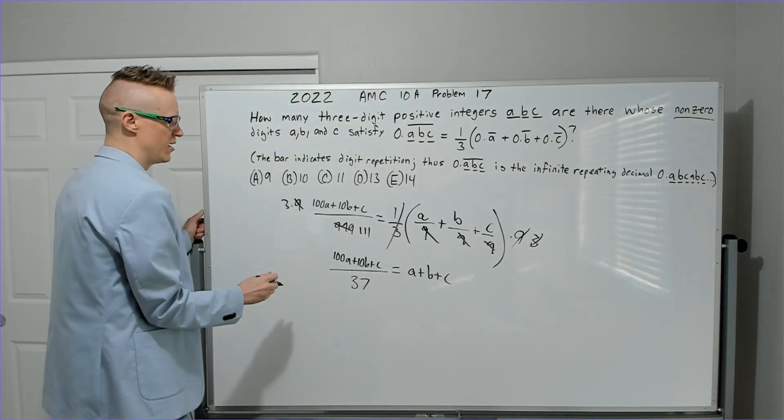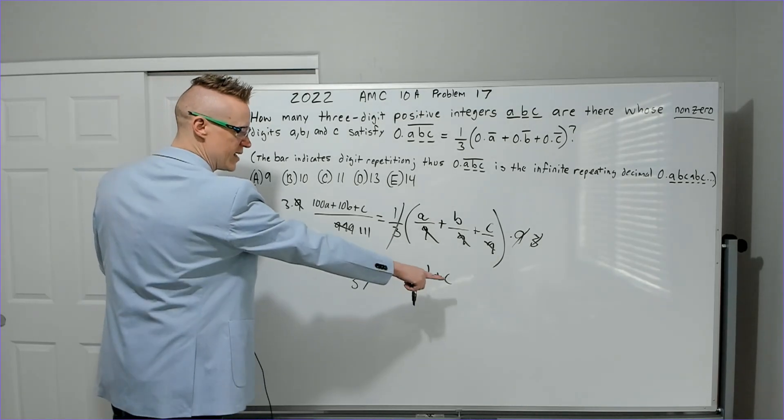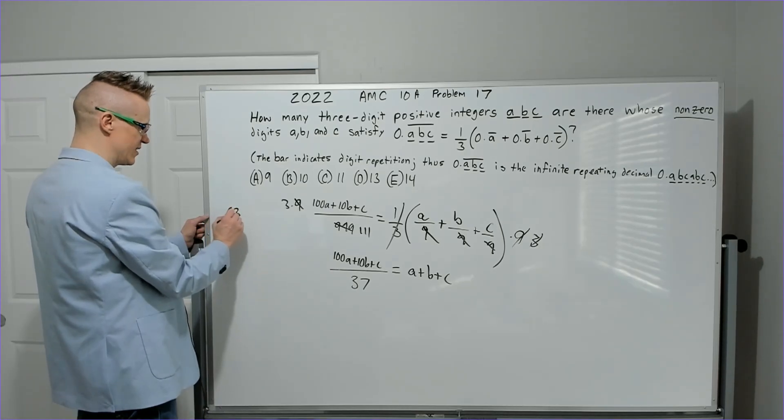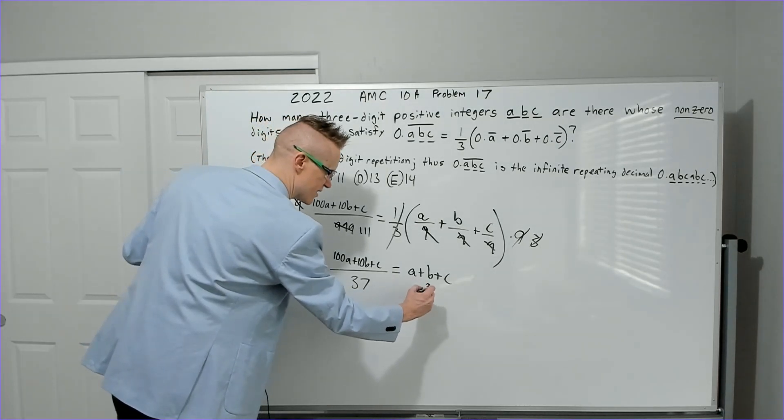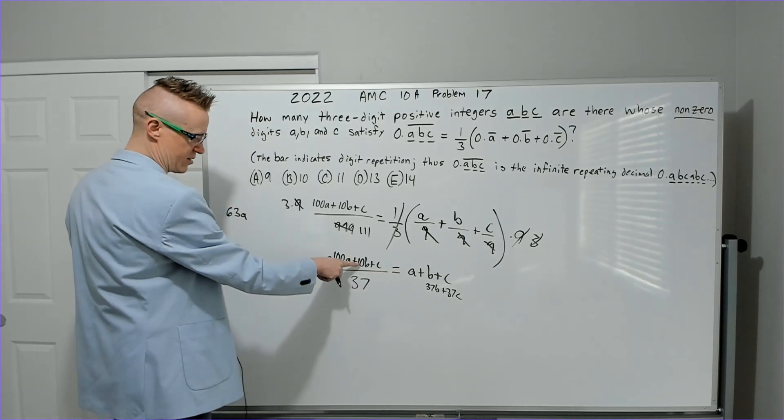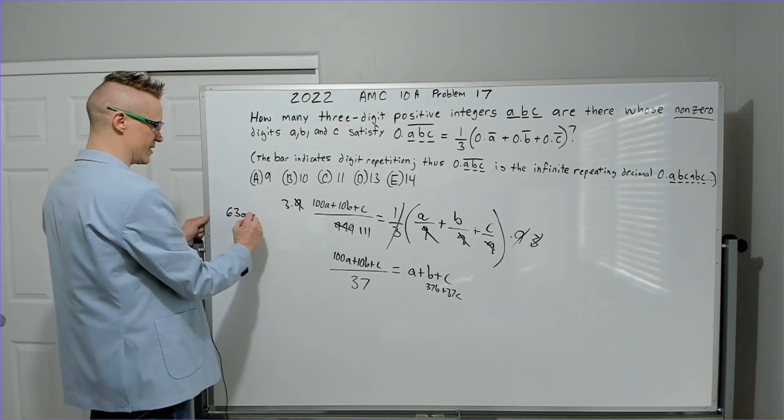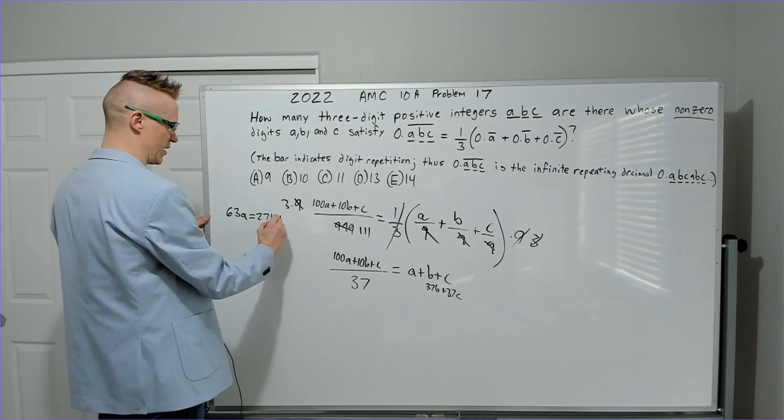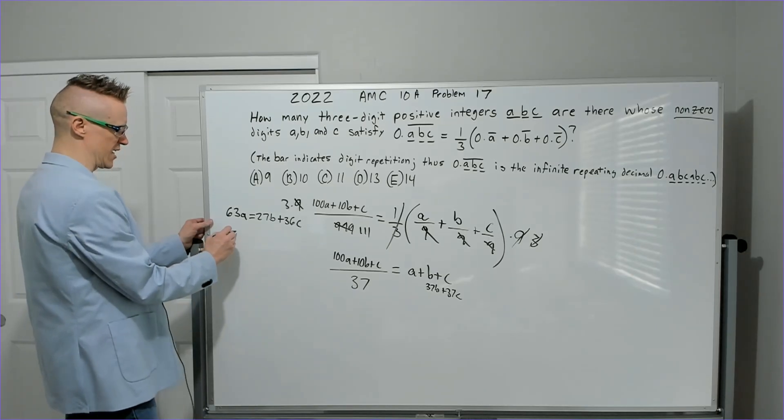Now I cross multiply. You're going to get 37 times ABC, but I'm going to move the 37A over simultaneously to get 63A. When I move the 10B to this side, you're going to get 27B, and then subtract C from 37 to get plus 36C. Now all of these are divisible by 9, so you might as well divide.